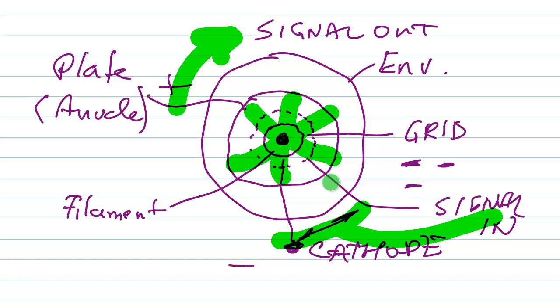They fluctuate in intensity at the plate because of the varying signal between the cathode and the grid. Small variations in the signal between the cathode and the grid cause large variations in the signal at the plate, and that is why this kind of device serves as an amplifier.